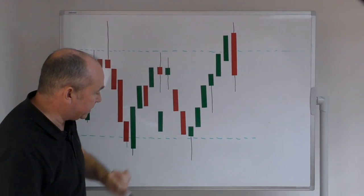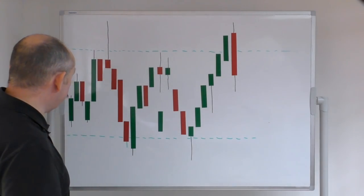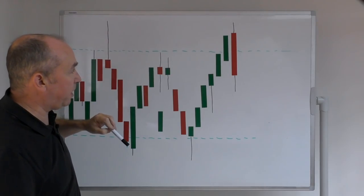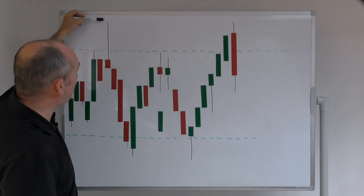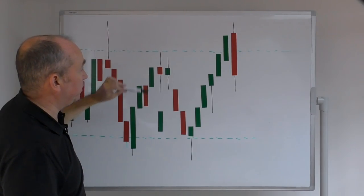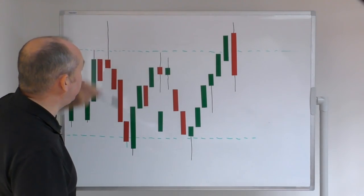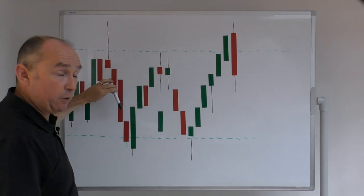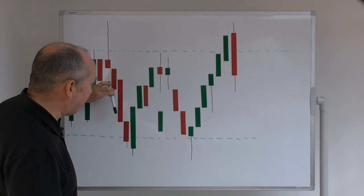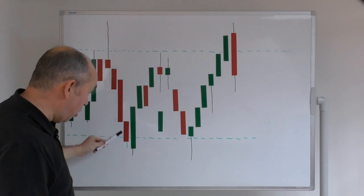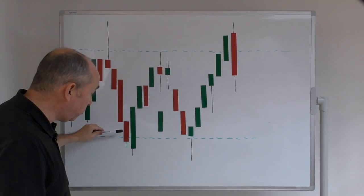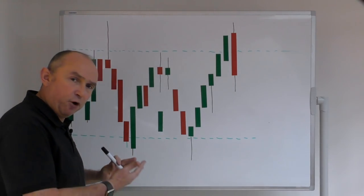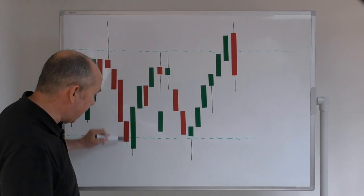So here I've drawn some resistance and support levels. The market is meandering around, moving up. We breach the level of resistance to the upside, the market trades up, bulls are in control, and then the sellers come in and push the market down — showing that this level of resistance is being respected. We trade back down and come back to the level of support. The level of support is broken with a bearish candle, but then a wave of buying comes in and completely engulfs the previous bearish candle.